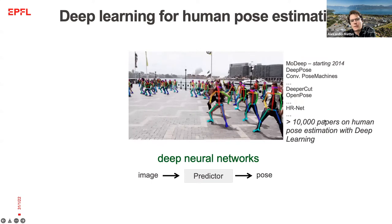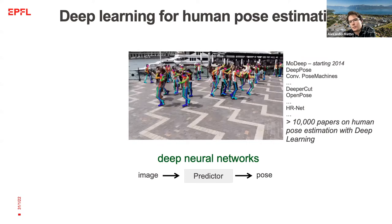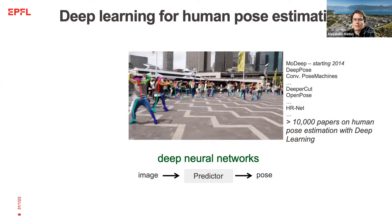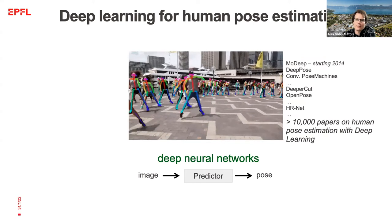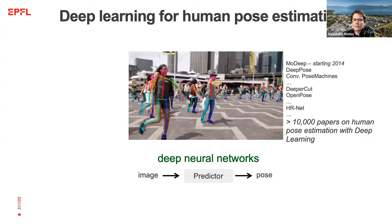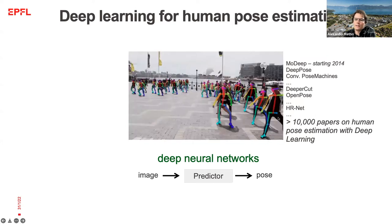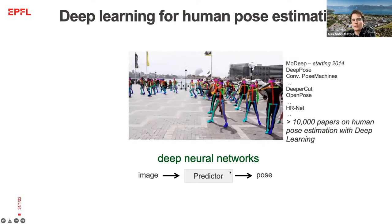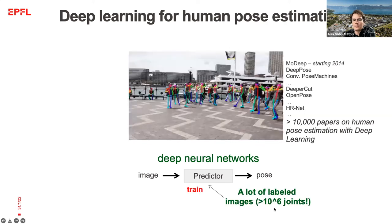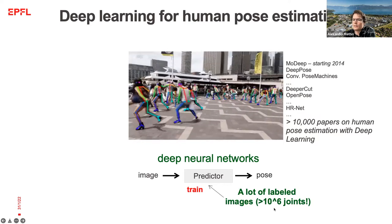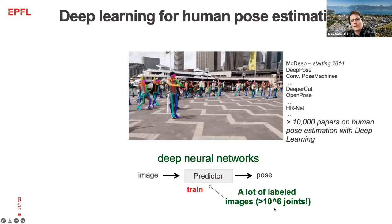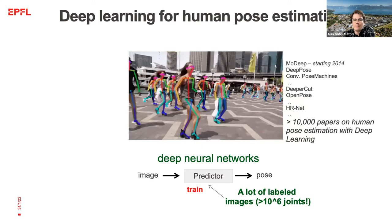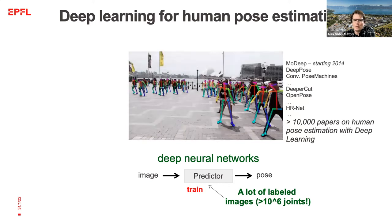Deep learning has really revolutionized this field of human pose estimation, and I think there are more than 10,000 papers published in this area because it's of great interest to many different applications. What you see in this scene is an algorithm called OpenPose. Essentially, this algorithm consists of a deep neural network — in this specific case, a convolutional deep neural network trained on a large-scale dataset called COCO, which contains thousands of images with annotated human poses.